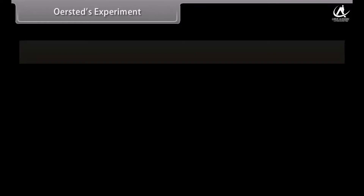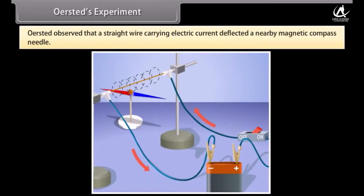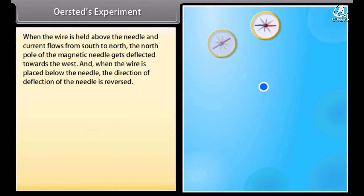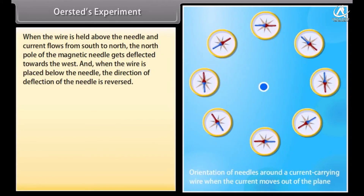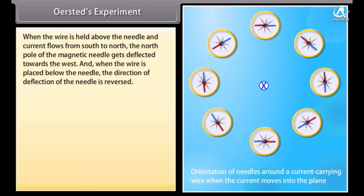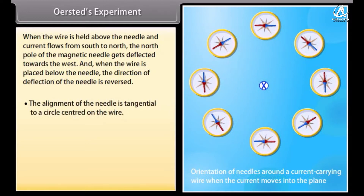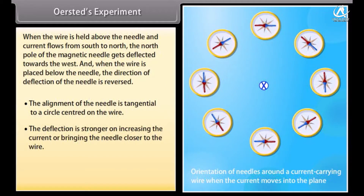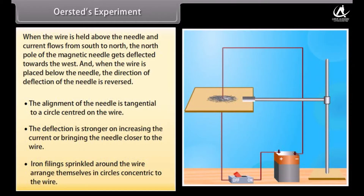Oersted's experiment: Oersted observed that a straight wire carrying electric current deflected a nearby magnetic compass needle. When the wire is held above the needle and the current flows from south to north, the north pole of the magnetic needle gets deflected towards the west. When the wire is placed below the needle, the direction of deflection is reversed. The alignment of the needle is tangential to a circle centered on the wire. The deflection is stronger on increasing the current or bringing the needle closer to the wire. Iron filings sprinkled around the wire arrange themselves in circles concentric to the wire.